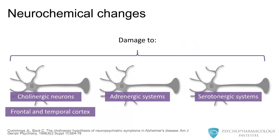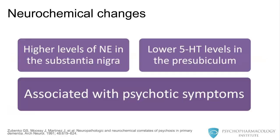Researchers have found that greater EEG delta power over the right hemisphere is associated with greater delusional misidentification syndromes. Some of the neurochemical changes associated with BPSD include damage to the cholinergic neurons, especially in the frontal and temporal cortices, and adrenergic and serotonergic system abnormalities in these individuals.